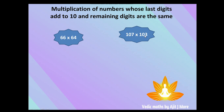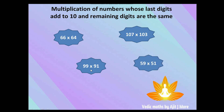One more: 99 × 91 — addition of 9 and 1 is 10, and the remaining digits are the same. And 59 × 51 — 9 plus 1 is 10, and the remaining digits are the same.